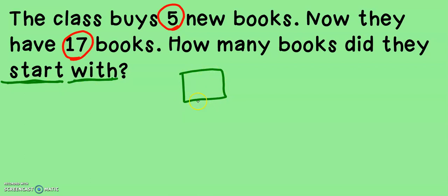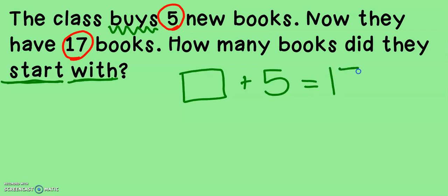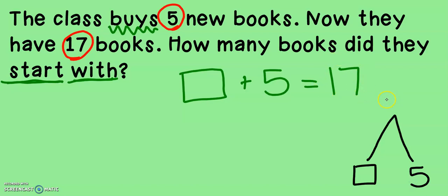So we know they had some books at the beginning. Then it says the class buys five new books. If they're buying five books, do you think we should add those books on or take those books away? We need to add them on because we are getting more books. Now they have 17 books. How many books did they start with? If I take these numbers and put them on our math mountain, something plus five — those are my two addends because I'm adding them up — they equal 17.